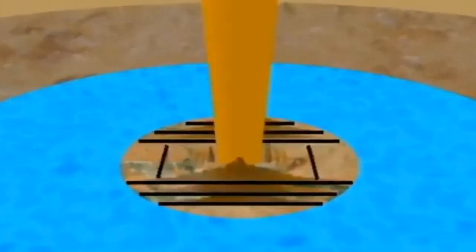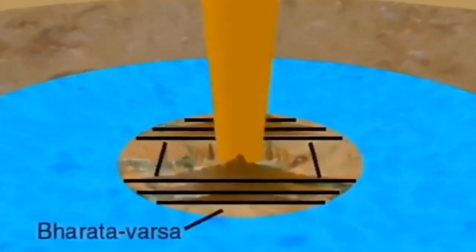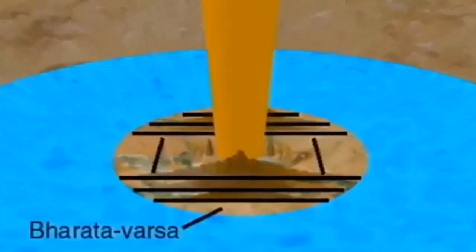To Jambudvipa's south is Bharatavarsha, a tract of land occupied by the conditioned souls engaged in fruitive work.